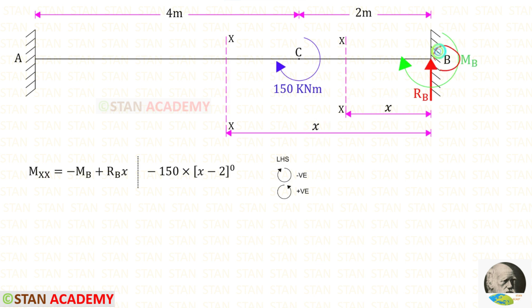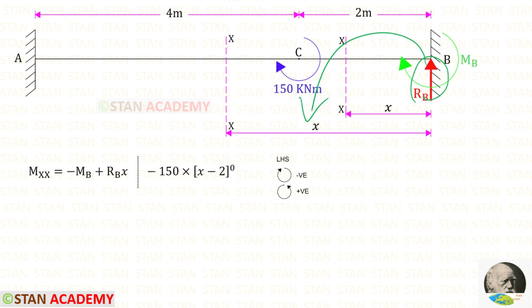From point B we are going to find the moments about the sections. In this case we have to follow the left-hand side rule: clockwise will be negative and anticlockwise will be positive. RB is acting in the anticlockwise direction, so it will be positive and the distance is X. Let us assume that MB is acting in the clockwise direction, so it will be negative.